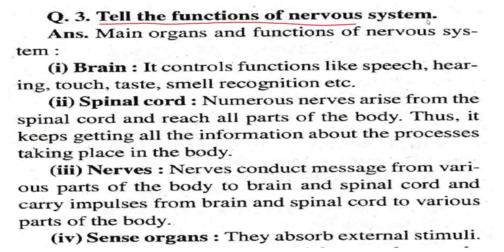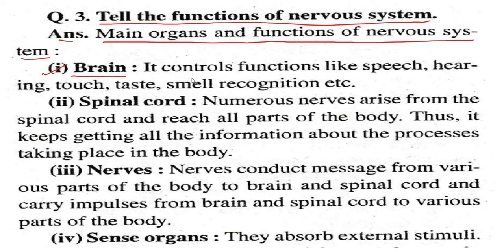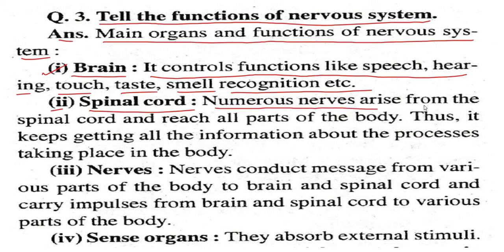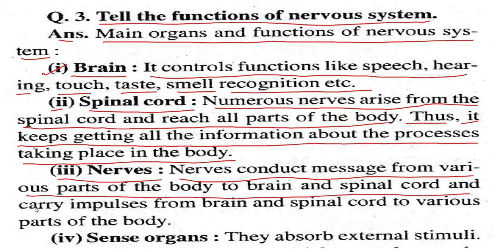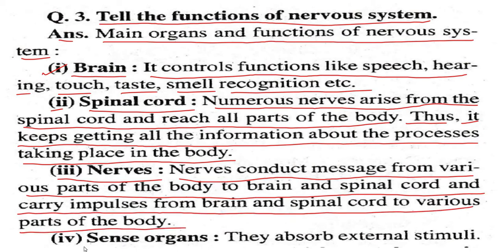Question: Tell the functions of the nervous system. Answer: The main organs and functions of the nervous system are as follows. Number one — brain: it controls functions like speech, hearing, touch, taste, smell, and recognition. Number two — spinal cord: numerous nerves arise from the spinal cord and reach all parts of the body, keeping it informed of processes taking place. Number three — nerves: nerves conduct messages from various parts of the body to the brain and spinal cord and carry impulses back. Number four — sense organs: they absorb external stimuli.